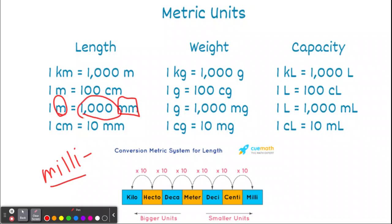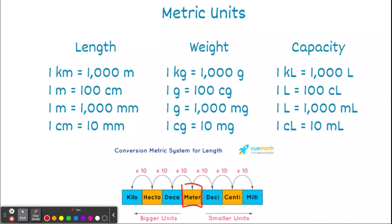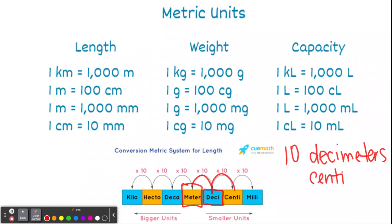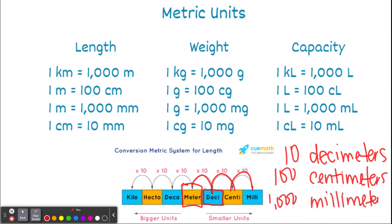Think of this like place value. Our base measurement is meters. When we divide a meter into smaller parts, there are 10 decimeters in one meter — the root word 'deci' means 10. Going to the next smallest, there are 100 centimeters in one meter — 'centi' means 100. And lastly, there are 1000 millimeters in one meter — 'milli' means 1000.